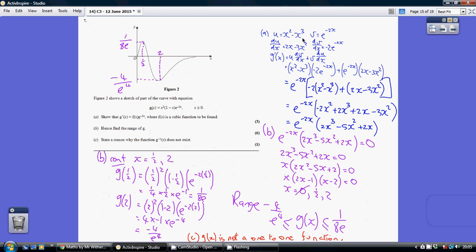That's our u, and our v is e to the minus 2x. Differentiating each of these, and then using the product rule, g'(x) equals u dv/dx plus v du/dx. So this times this plus this times this.